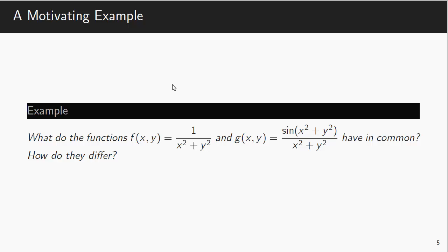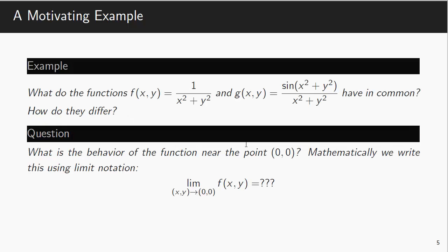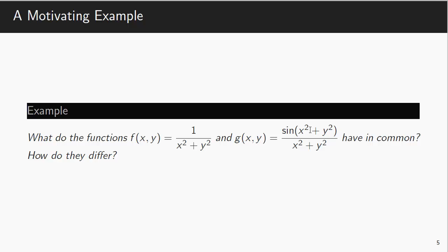So let's motivate this study with a brief example. Let's take two functions. f(x,y) = 1/(x² + y²) and g(x,y) = sin(x² + y²)/(x² + y²). What do they have in common? How are they different? And if you think about it for a minute, you might notice that both of these functions are undefined at (0,0). If I evaluate f at (0,0), I get 1 divided by 0, which is undefined. And similarly with g, although in this case I'll have the sine of 0, which is 0, divided by 0. So I get 0 over 0 in this case and 1 over 0 in this case. So they're both undefined at (0,0), but in slightly different ways.